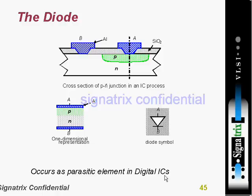This diode occurs as a parasitic element in a digital IC. Parasitic means a parasitic effect — they are not real but virtually they are present and they are affecting the circuit. You do not want to implement a diode, but virtually it will come into the picture, and because of that you are having some problems. That is why it is said that it occurs as a parasitic element in a digital IC.